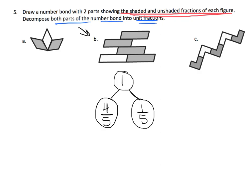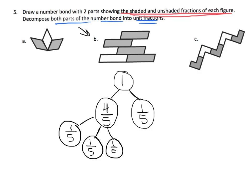Teachers, don't freak out if your students swap these — it's not a big deal. The second part says, decompose both parts of the number bond into unit fractions. Well, this one is already a unit fraction. So we just need to decompose the four fifths into unit fractions: one fifth, one fifth, one fifth, and one fifth. You know we've done it right because you can count one fifth, two, three fifths, four fifths, five fifths — the entire shape is present and accounted for.